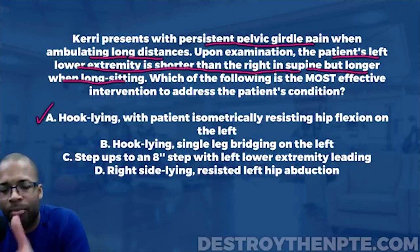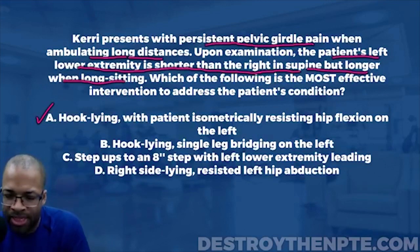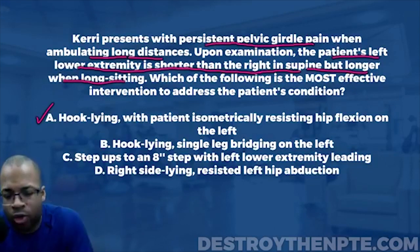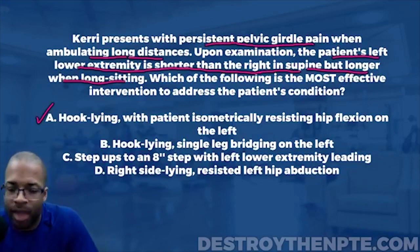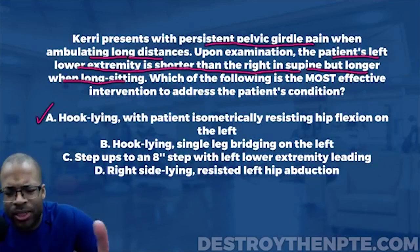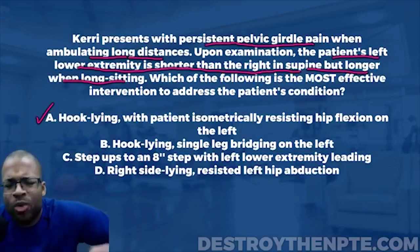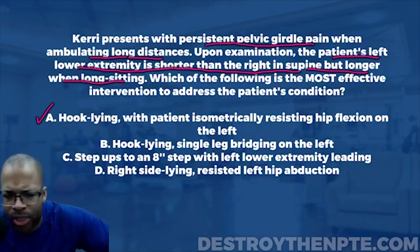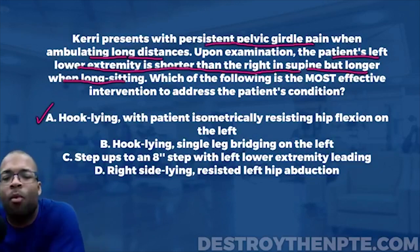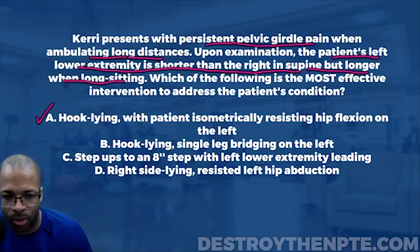Answer B is hook lying, single leg bridging on the left. What muscle group does a single leg bridge activate? It activates the glute max and also the hamstrings - both hip extensors. The key question is: do the glute max and hamstrings produce a posterior rotation or an anterior rotation? They produce a posterior rotation. The patient's innominate is already posteriorly rotated, so we don't want to make it worse. B is out.